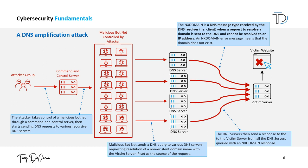The attack works by exploiting the fact that DNS servers are typically configured to respond to requests from any IP address. An attacker can use a large number of compromised or maliciously controlled DNS servers to send a large number of DNS queries with the target server's IP address as the source address to other DNS servers on the internet. The responses to these queries, which can be much larger than the original queries, will be directed back to the target server, overwhelming it with traffic and making it unavailable for legitimate users.